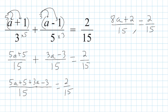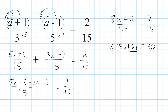Now what we have looks like a proportion, so we cross multiply and rewrite. We have 15 times (8a plus 2) equals 2 times 15 which is 30. Instead of using the distributive property, I'm going to straight away divide both sides by 15. The 15 cancels on the left, and 30 divided by 15 is 2 on the right. That leaves us with 8a plus 2 equals 2. Now I'm going to subtract 2 from both sides.